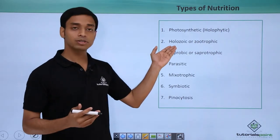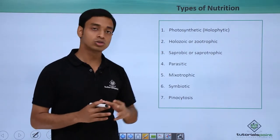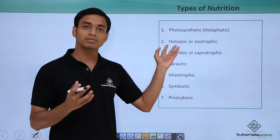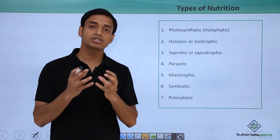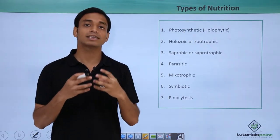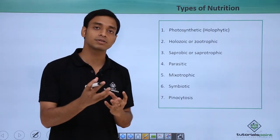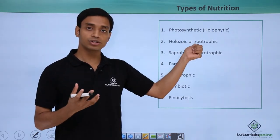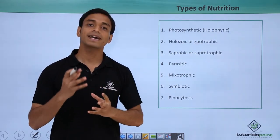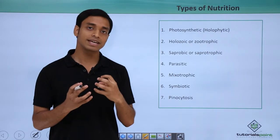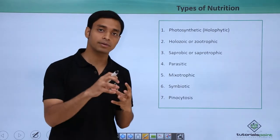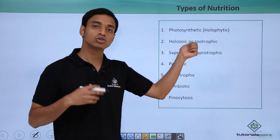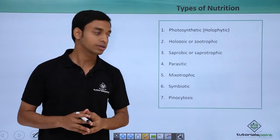The next type is known as holozoic or zootrophic nutrition. Here the organisms — the protists — ingest food materials or other organisms as a whole. This is a type of nutrition normally performed by animals, where they can feed upon their prey directly. This is known as holozoic or zootrophic type of nutrition.